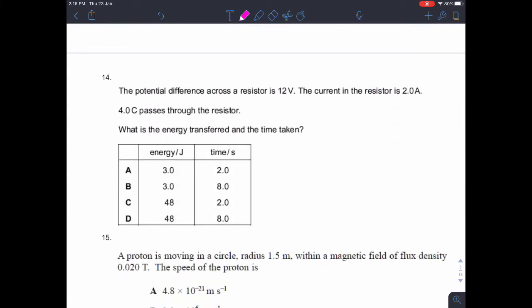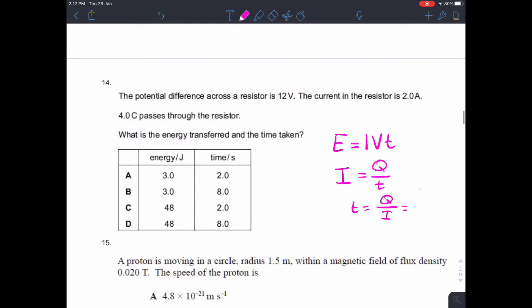Question 14. The potential difference across a resistor is 12 volts. The current in the resistor is 2 amps. 4 coulombs of charge passes through the resistor. What is the energy transferred and the time taken? So energy equals IVT, and also current is charge divided by time. So time is charge divided by current, which gives us a time of 4 divided by 2, which is 2 seconds. So it's not B and it's not D. And then we have energy is IVT, so energy is 12 times 2, which is 24 times T, which is 2. So that's 48. So it must be C.